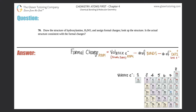Number 70: draw the structure of hydroxylamine, which is H3NO, and assign formal charges, then look up the structure. Is the actual structure consistent with the formal charges? I know what hydroxylamine actually looks like, so we're going to switch this question a little bit. I'm going to give you two structures and find the formal charges, and from that we will figure out which one is the correct structure of hydroxylamine. It's written kind of from left to right as H3NO.